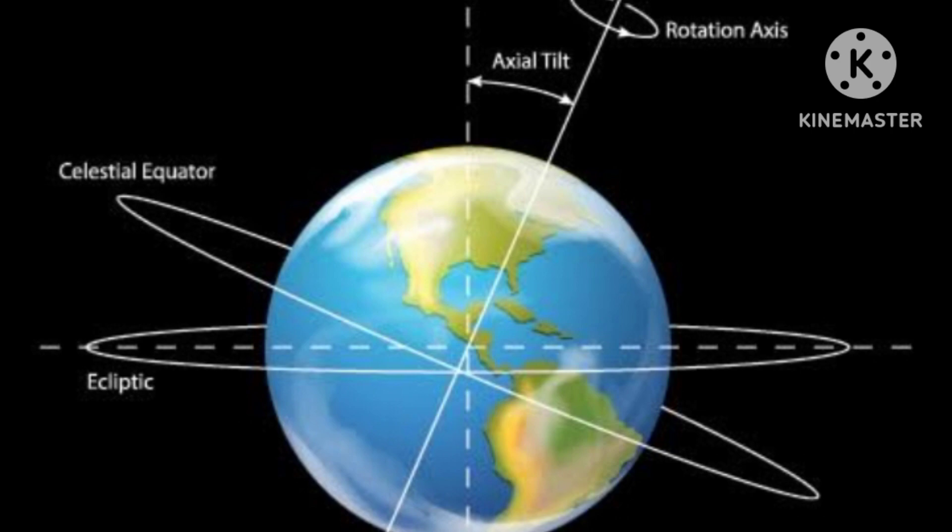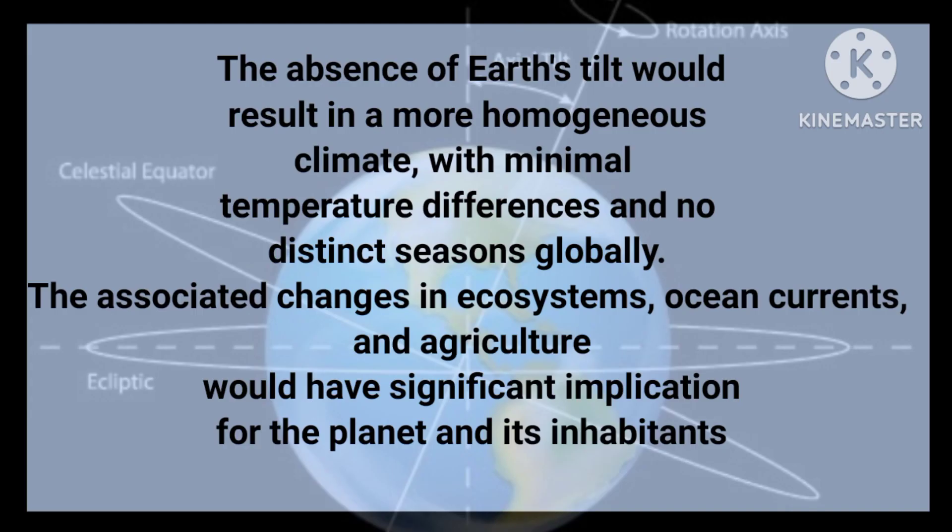Overall, the absence of Earth's tilt would result in a more homogeneous climate, with minimal temperature differences and less distinct seasons globally. The associated changes in ecosystems, ocean currents, and agriculture would have significant implications for the planet and its inhabitants.